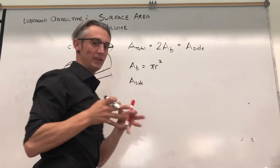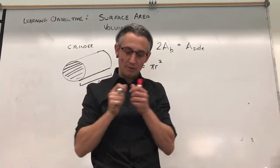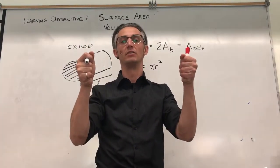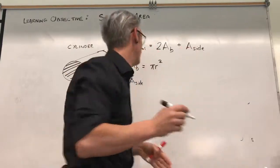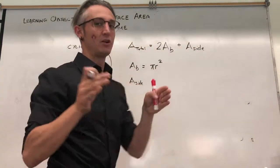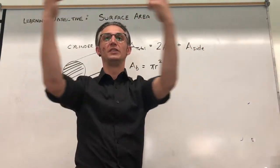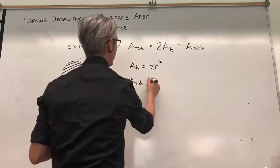The area of the side: think of a tuna can or a tomato can. If you were to take the wrapper and unwrap it, you would have a rectangle — it would just be a rectangle. To figure out how long the top of the rectangle is, it wraps around — well, that's the circumference.